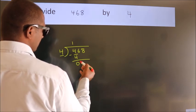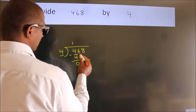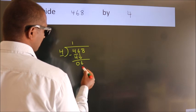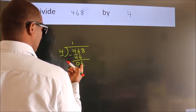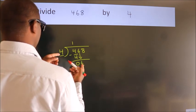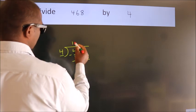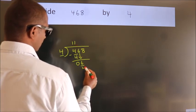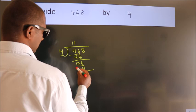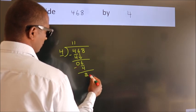After this, bring down the beside number. So 6 down. A number close to 6 in the 4 table is 4 once, 4. Now we subtract. We get 2.